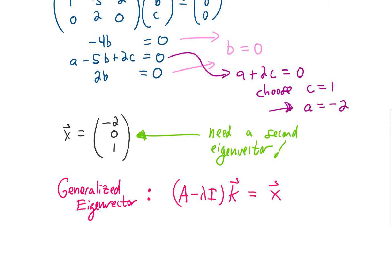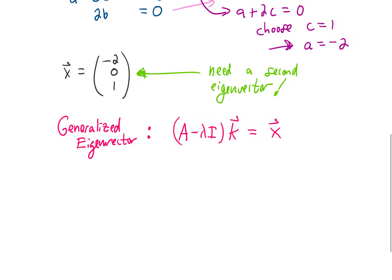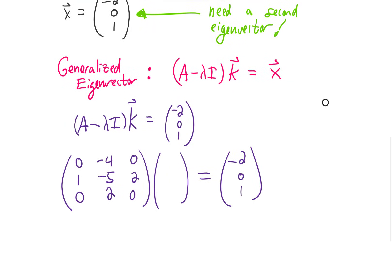In this formula, our generalized eigenvector is going to be called k, and this x on the right hand side of the equation is the eigenvector we found earlier. In other words, we have this formula right here to solve for k. Now this A-λI is the same A-λI from the previous part of this problem. So we'll put the A-λI back in there. And k, I'll call that a₁, b₁, c₁.